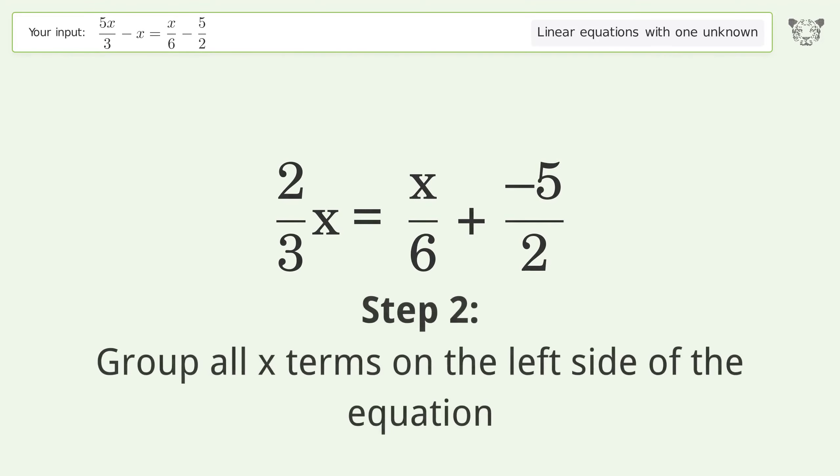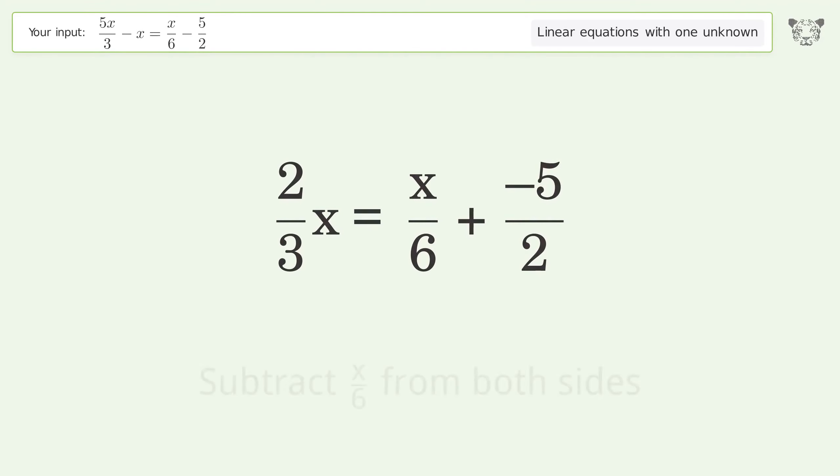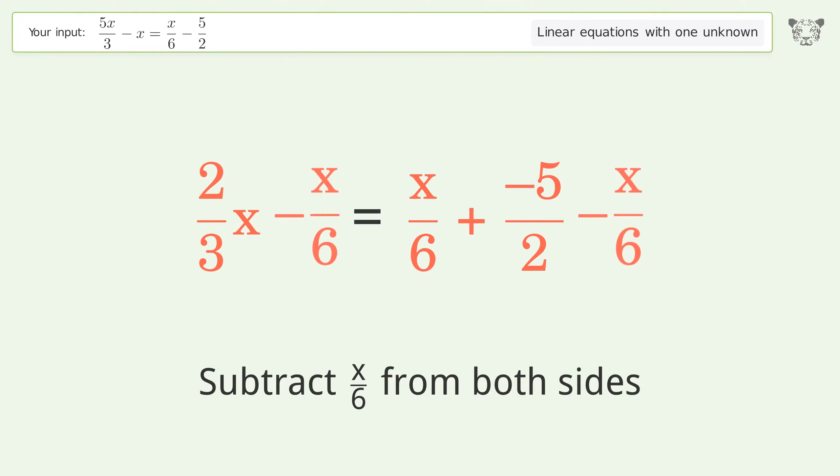Group all x terms on the left side of the equation. Subtract 10 over 6 from both sides. Group the coefficients.